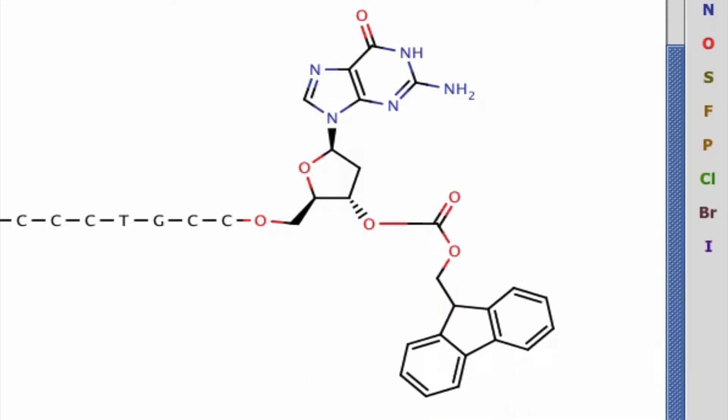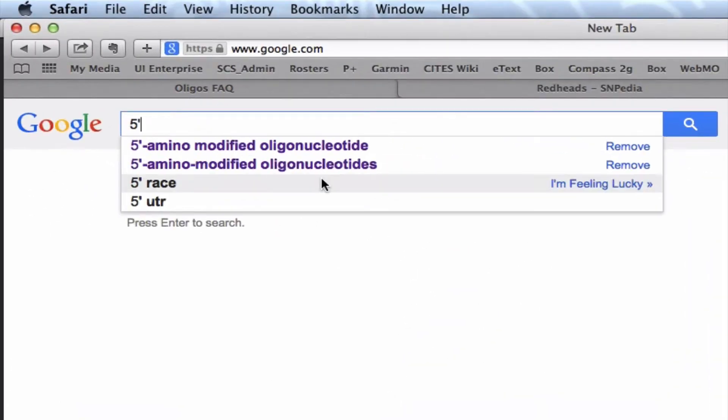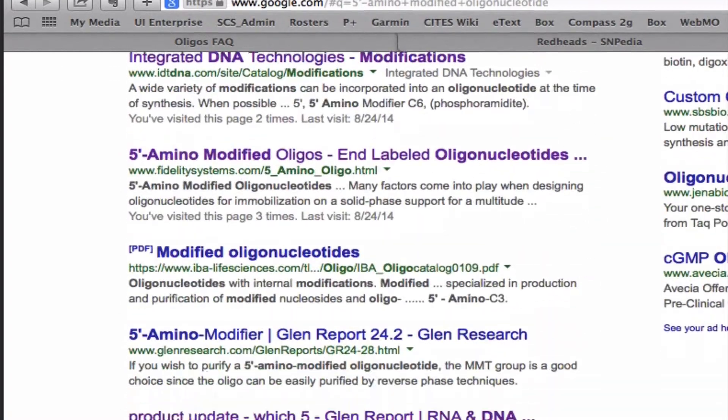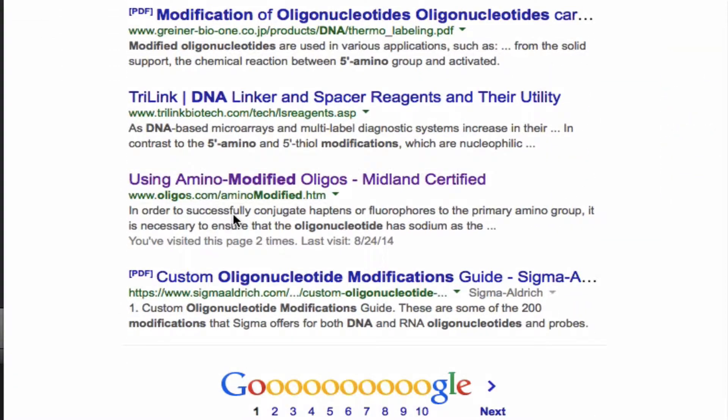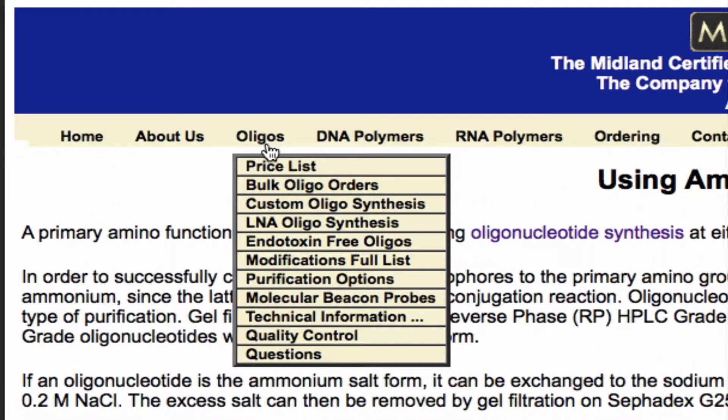How about that 5' amino group that was mentioned in that figure 4? Well, if you go and search through Google, dig down a little bit, you'll come to some companies, and if you search through those companies, you'll find that they offer a variety of different amino-tagged nucleic acids.